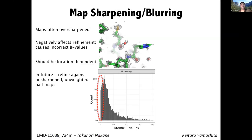Map sharpening and blurring is very important to consider when refining against cryo-EM maps. Maps are often over-sharpened — you can see in this case that the map is clearly quite noisy. If your map is over-sharpened, this can negatively affect refinement and causes incorrect B-values. In the histogram you can see a large number of atoms with extremely low B-values close to zero, which doesn't make any sense. Atomic B-factors should not be close to zero; they should have a nice shifted inverse gamma distribution. If the map is too sharp, the whole distribution shifts left, and there is no way to recover from this.